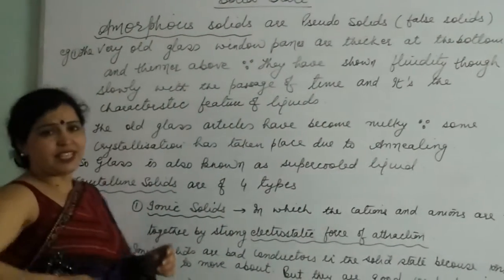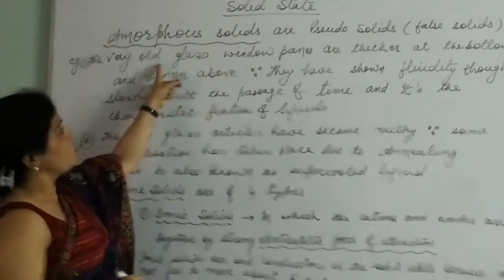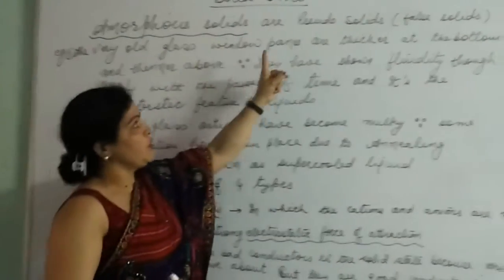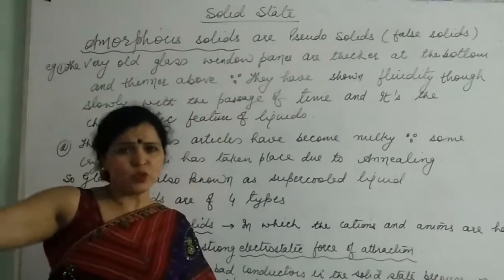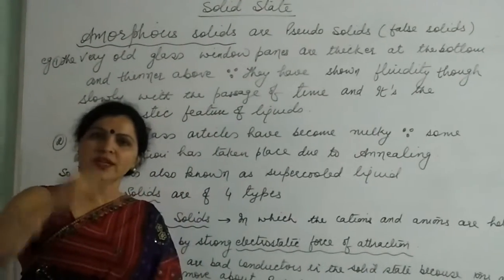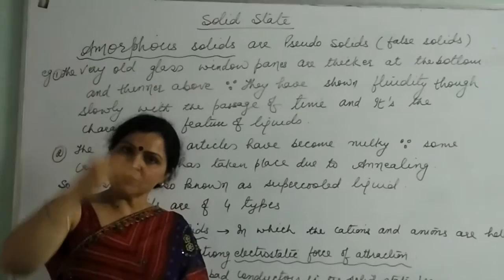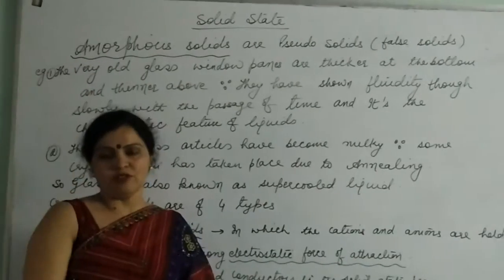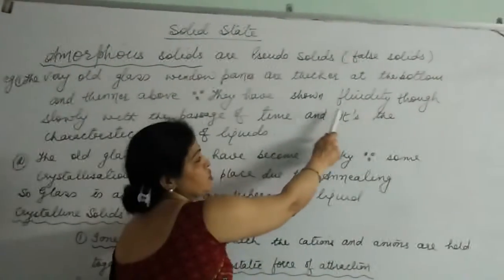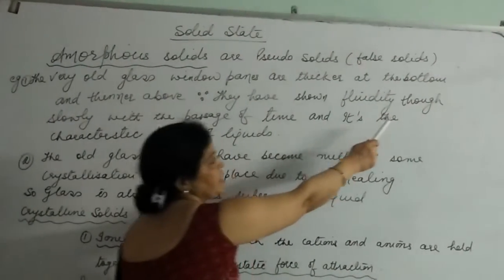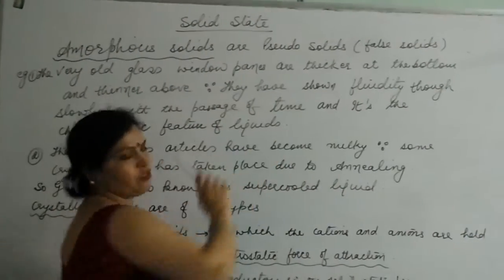Let us take the example of glass — very old glass window panes. They are thick at the bottom. Do you know why? Because they have shown fluidity, very slowly, with the passage of time.